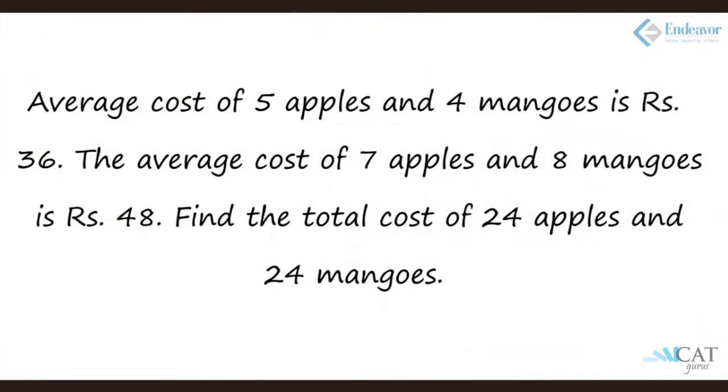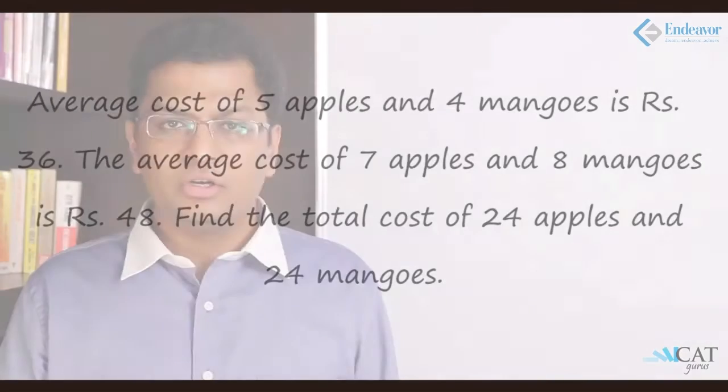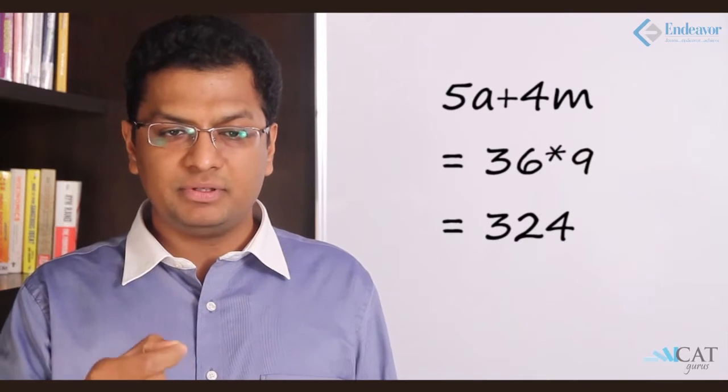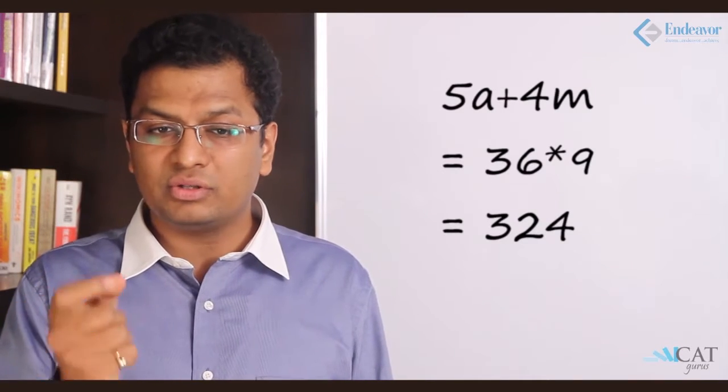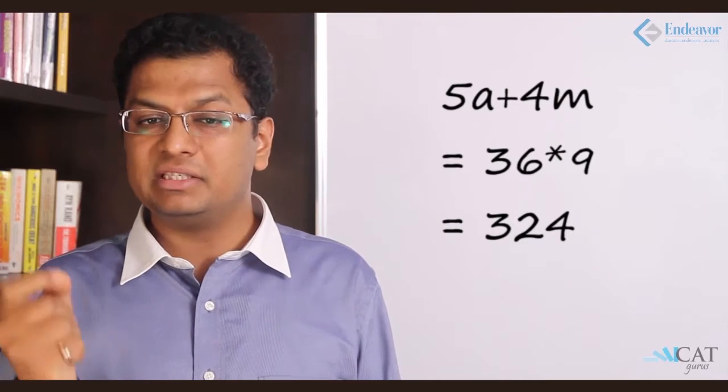Let us take some examples. Average cost of 5 apples and 4 mangoes is Rs. 36. The average cost of 7 apples and 8 mangoes is Rs. 48. What is the total cost of 24 apples and 24 mangoes? Now let us put it in formulas. 5a plus 4m equals 36 times 9, which is 324.